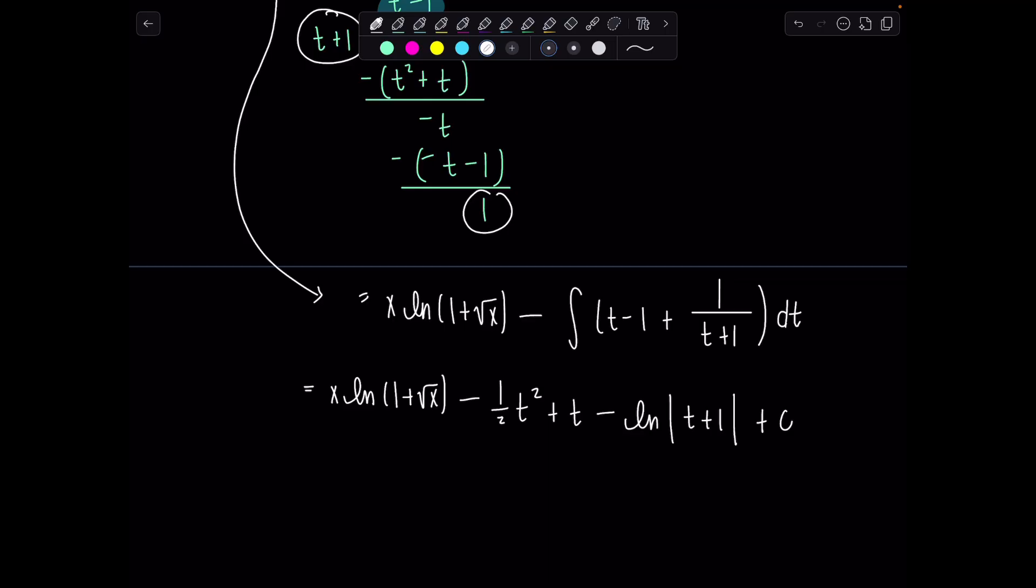And then I'm going to go back, replace all of the t's with rad x. So x ln(1 plus rad x) minus 1 half, that'll just be x plus rad x, minus ln, rad x won't be negative, so I don't have to put absolute value if I'm adding 1 to it.